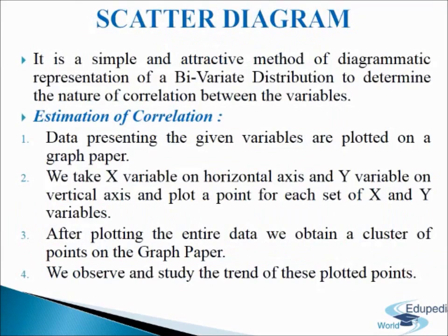First, we will discuss the scatter diagram. A scatter diagram is a simple method of measuring correlation. It is a graphic presentation of the relation between two variables. It offers the direction and degree of change between two variables graphically. It is a simple diagrammatic representation of a bivariate distribution to determine the nature of correlation between variables, and gives a visual idea about the nature of association between the two variables.